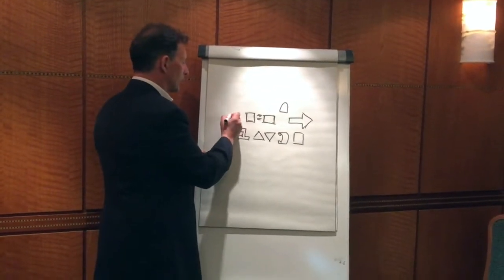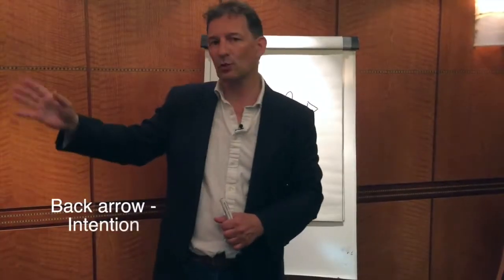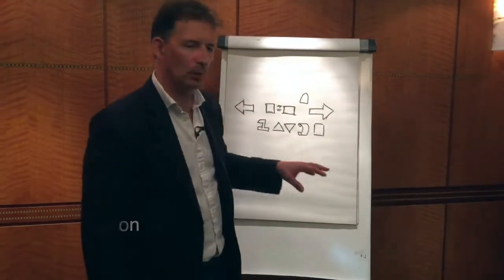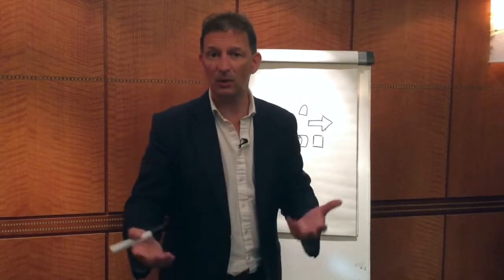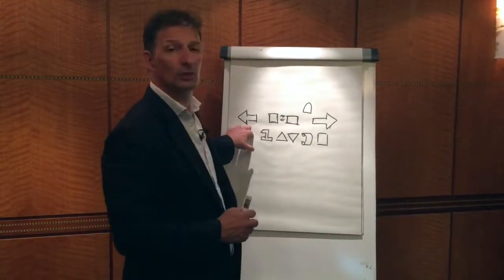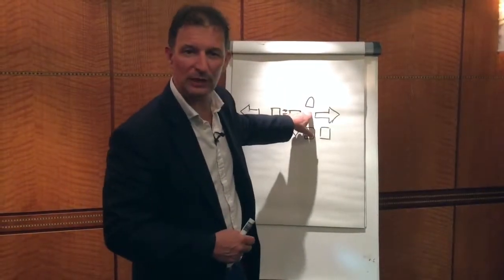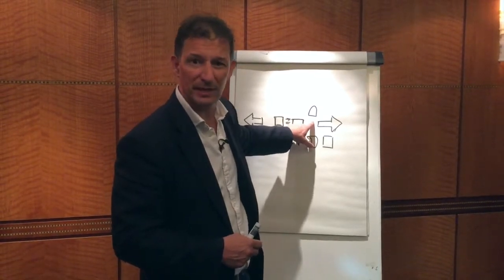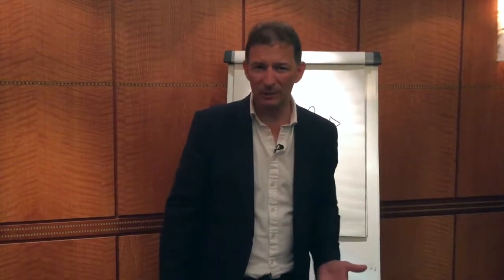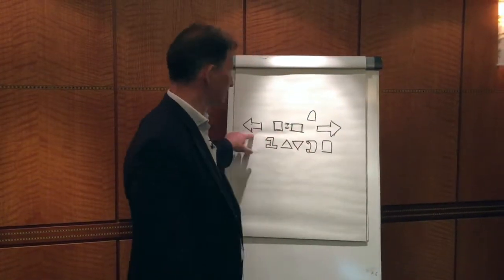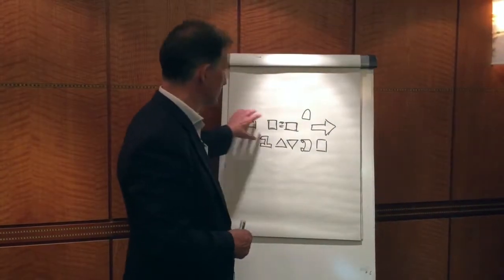We then have an arrow pointing backwards, which is about intention. You would say: 'I know that your intention is good — obviously to protect your clothing or not get a cold or whatever it may be. However...' and then this pattern is usually linked with one of the other patterns. For example: 'However, isn't it more important to live your life than worry about a bit of rain?' or 'Can you imagine what would happen to your life if you never went out when it was raining?' So we're using the intention frame.